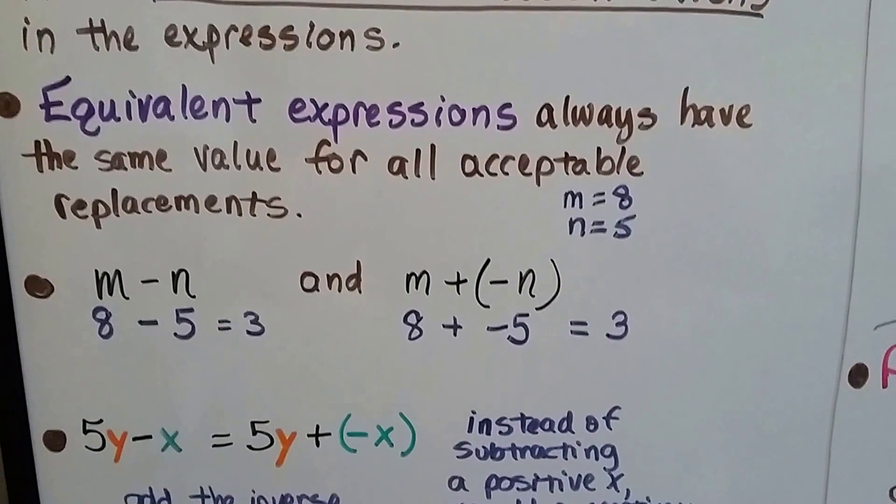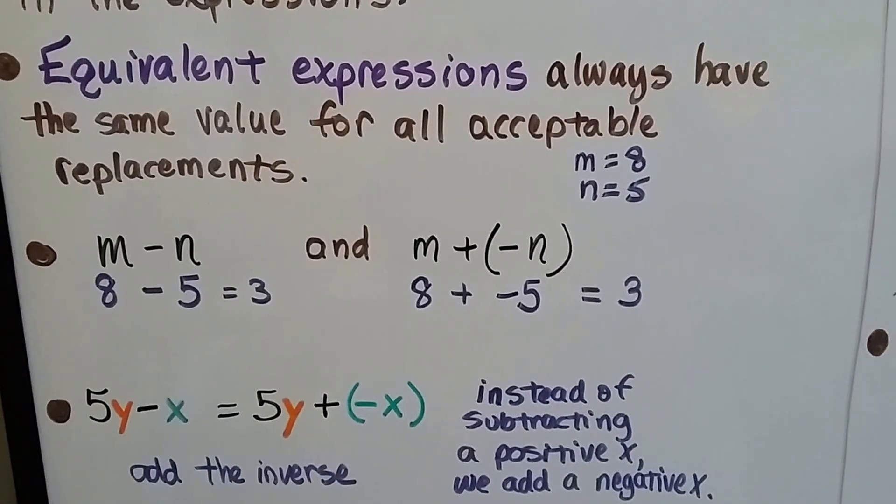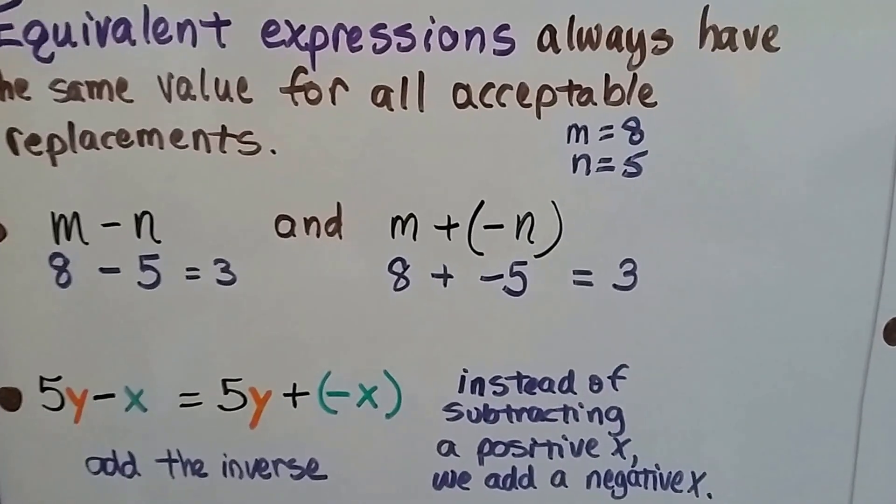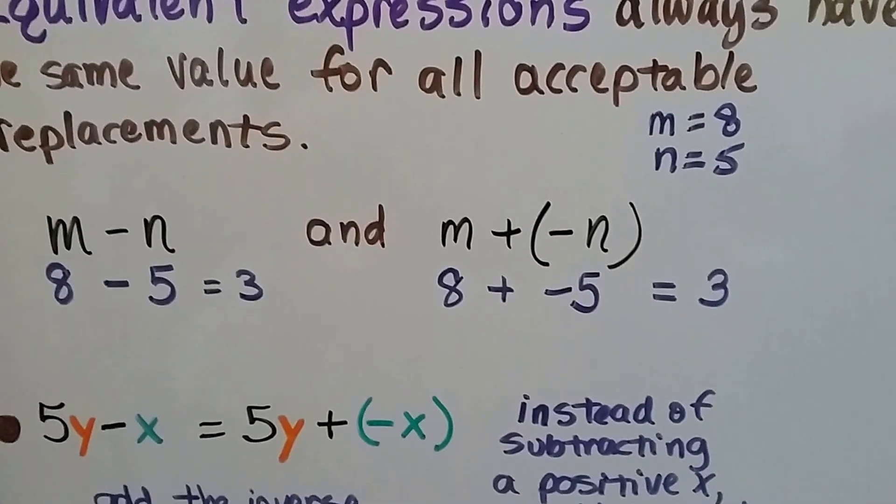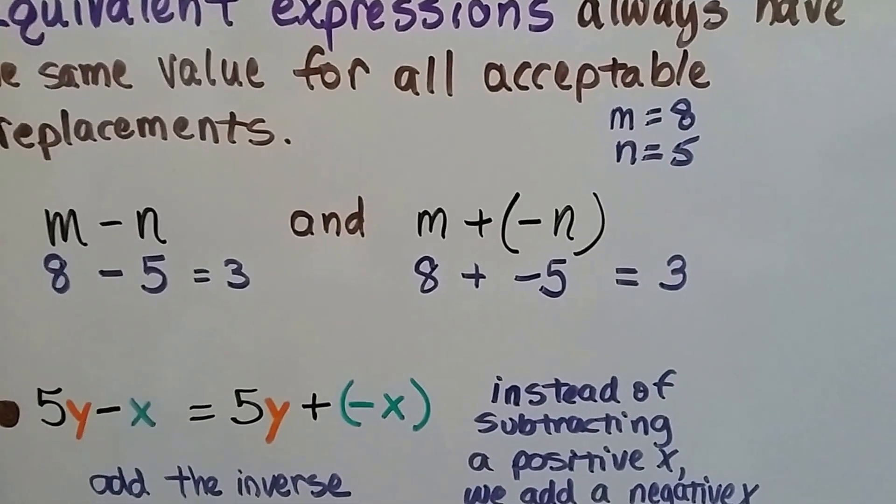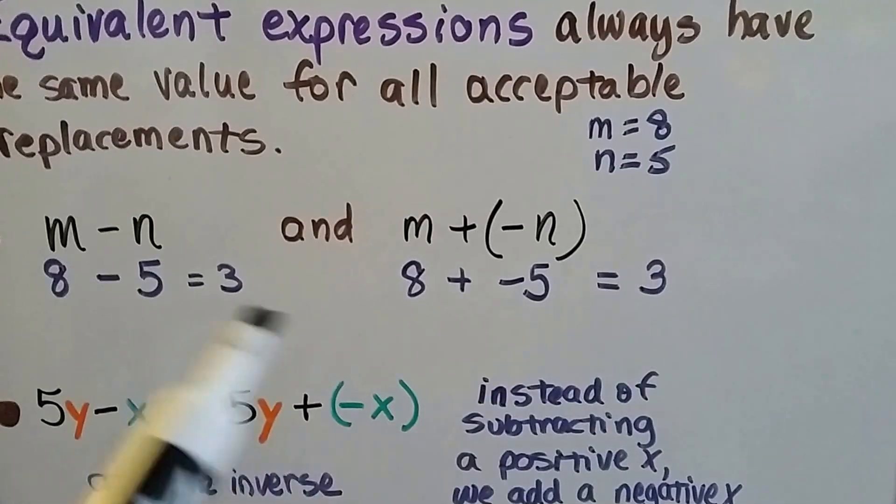And equivalent expressions will always have the same value for all acceptable replacements. So if m equals 8 and n equals 5 in either of these expressions, m minus n and m plus a negative n, we're going to get the same answer because they're equivalent. We can subtract 5 or we can add a negative 5. We're still going to get 3.